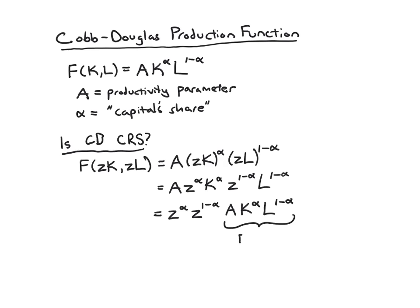The last part is just our original F of K and L. The Z terms at the beginning — Z to the alpha times Z to the 1 minus alpha — reduce down to Z, because when you multiply two things with exponents you add them: alpha plus 1 minus alpha. Those cancel and we're left with Z. So Cobb-Douglas is indeed constant returns to scale: F of ZK and ZL equals Z times F of K and L.